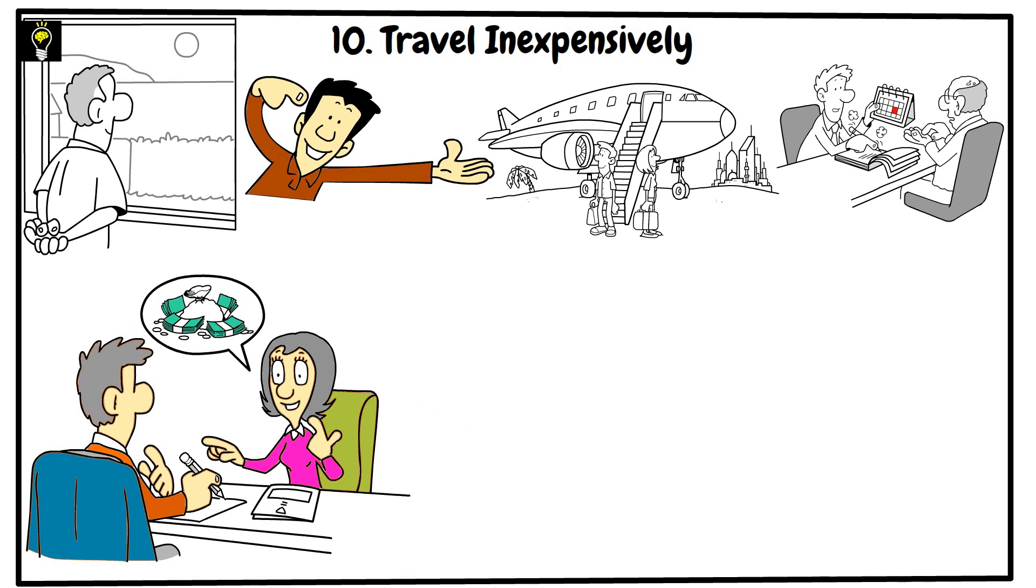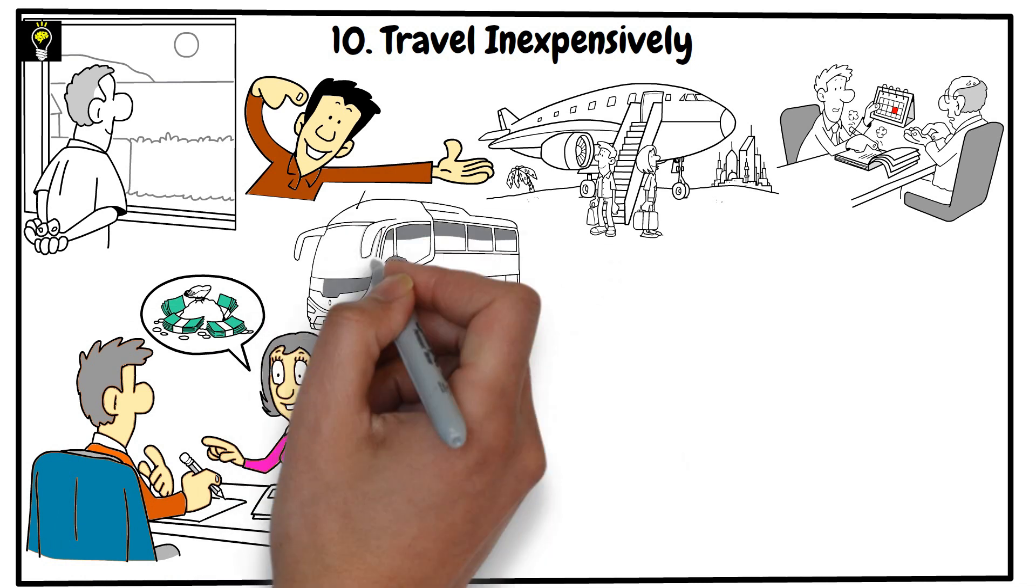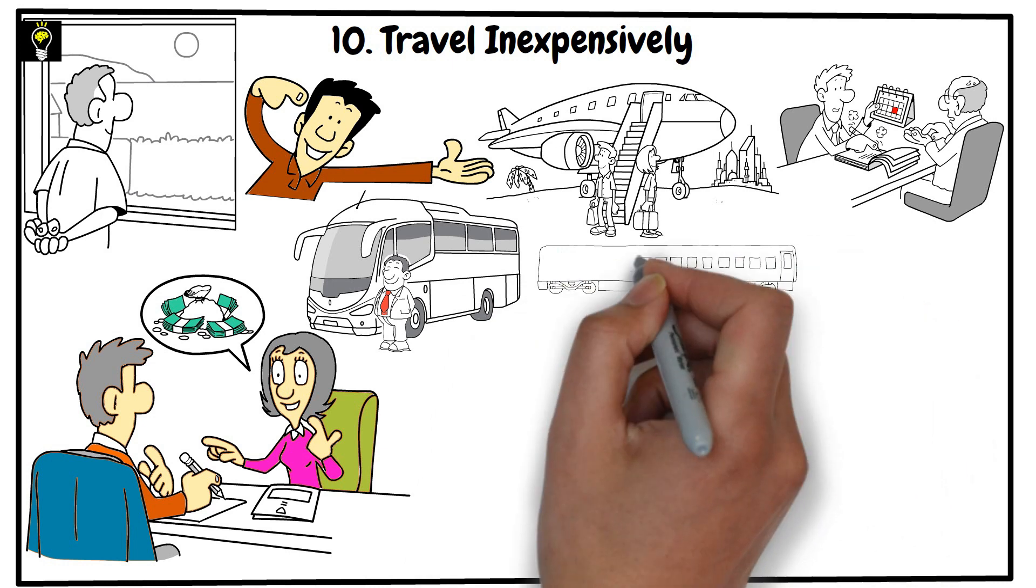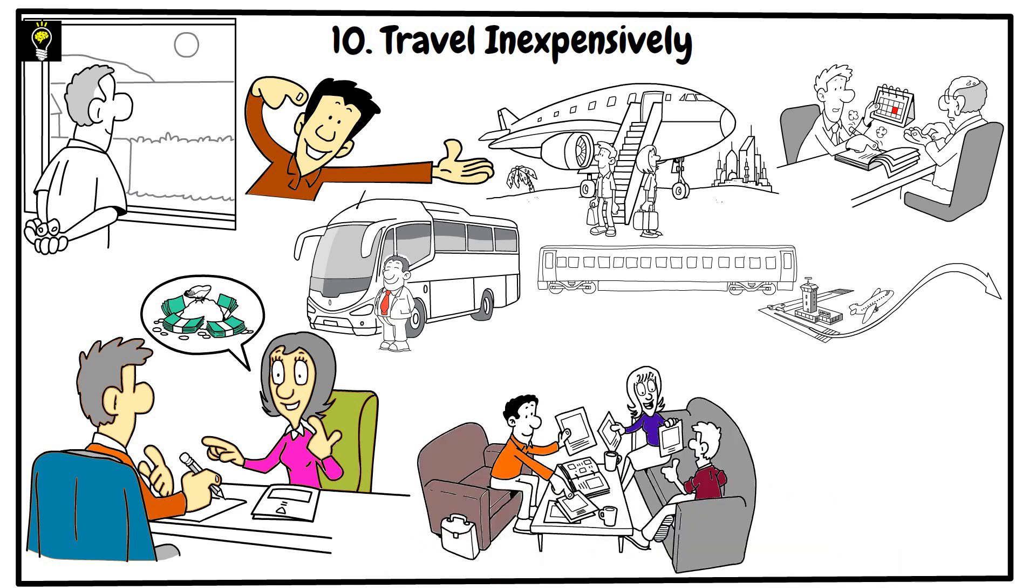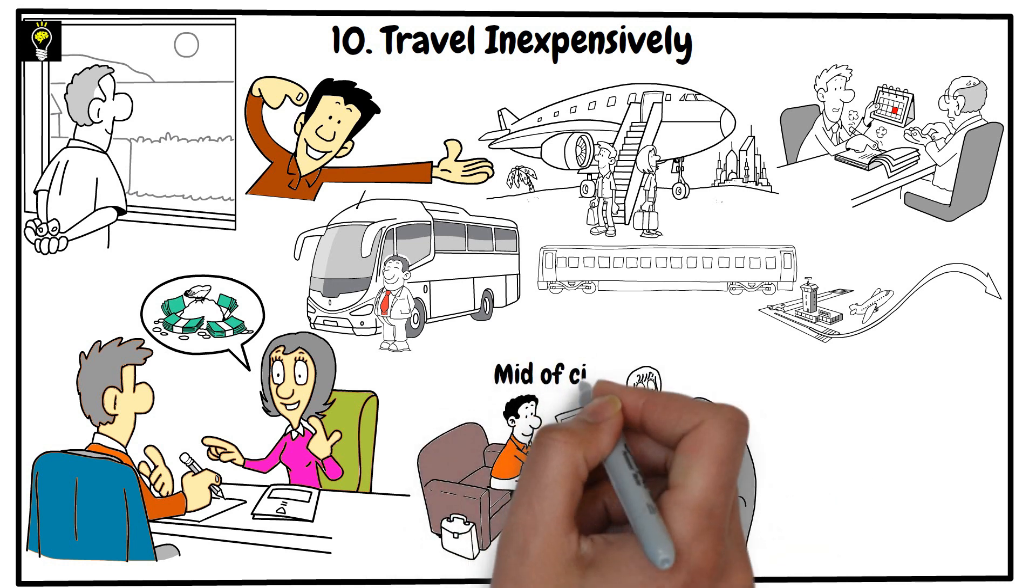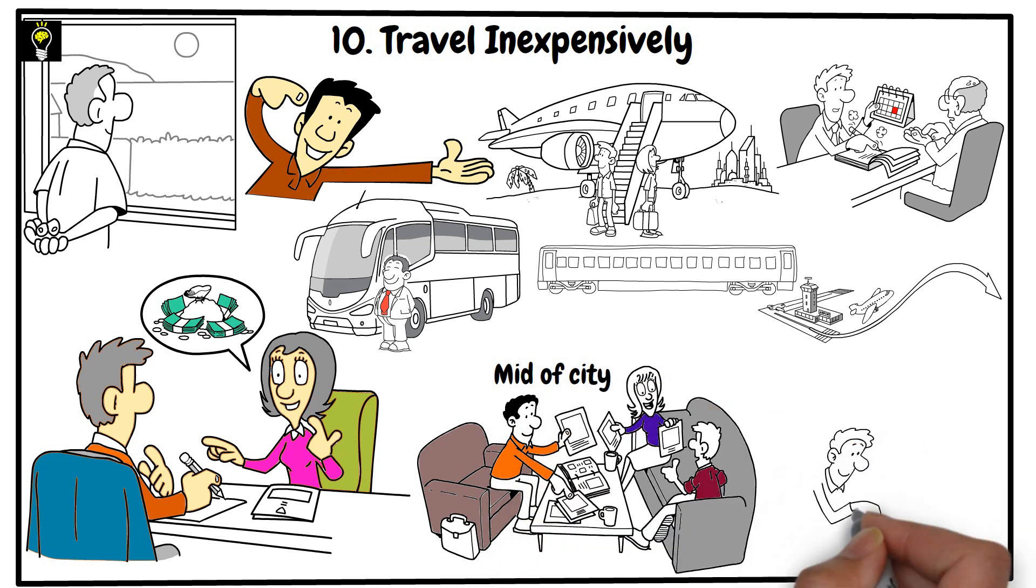Another way to cut costs is to look for alternate modes of transportation, such as taking the bus or train instead of flying. Additionally, try to book accommodation in locations that are not in the heart of the city, as these tend to be more expensive. By following these tips, you can save a lot of money on your next trip.